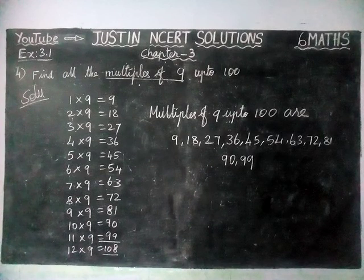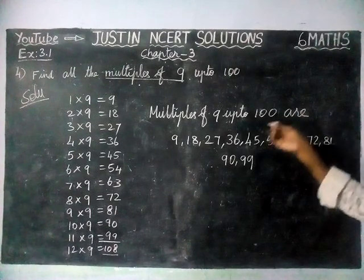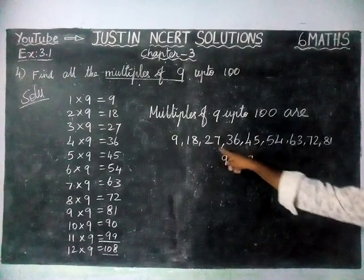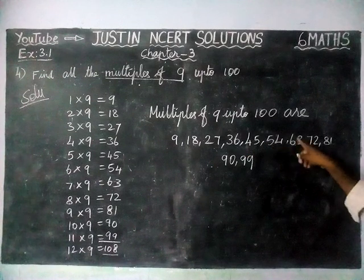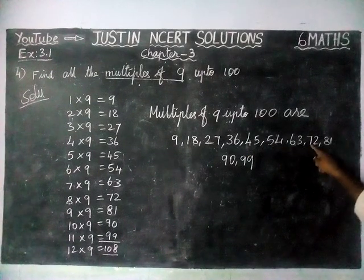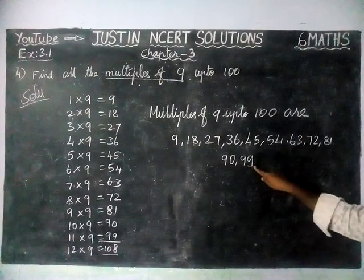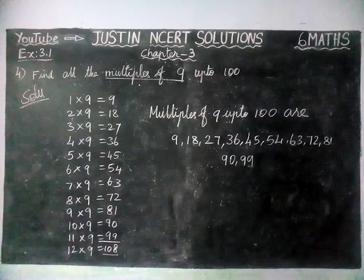So, multiples of 9 up to 100 are: 9, 18, 27, 36, 45, 54, 63, 72, 81, 90, and 99.